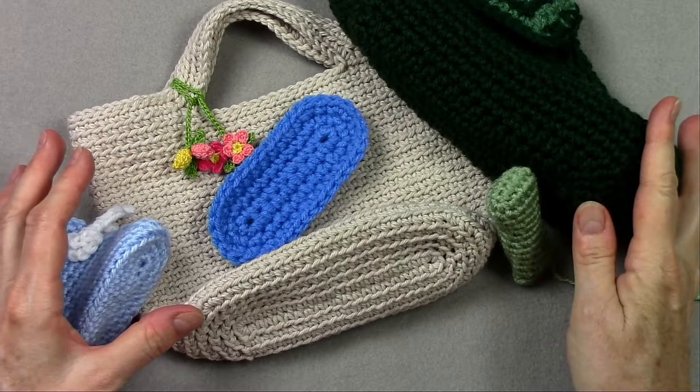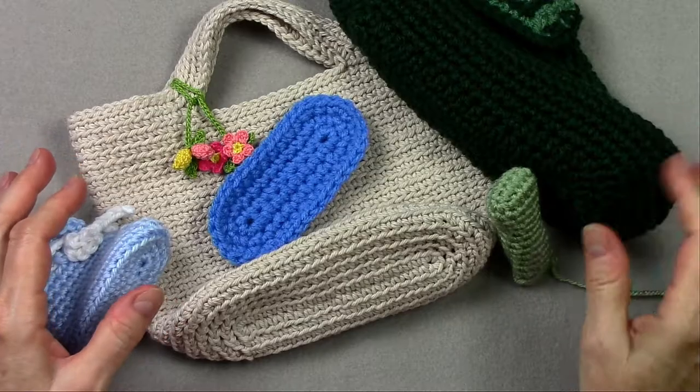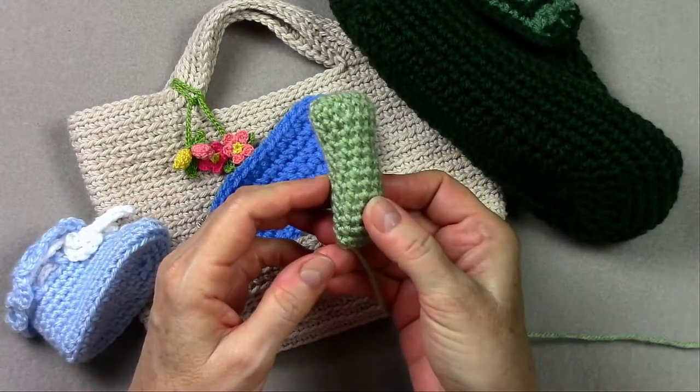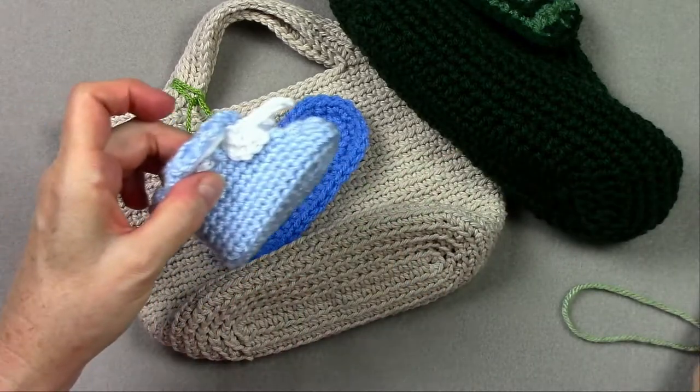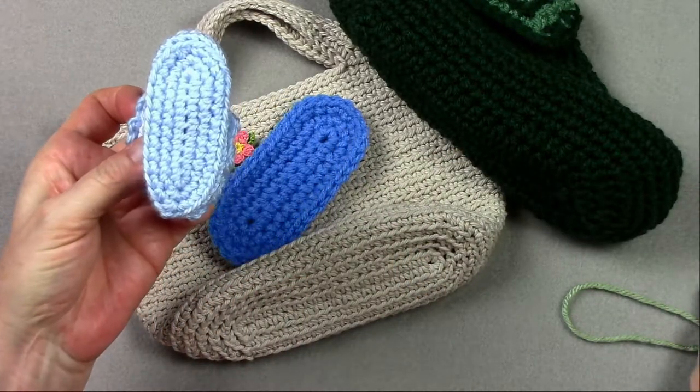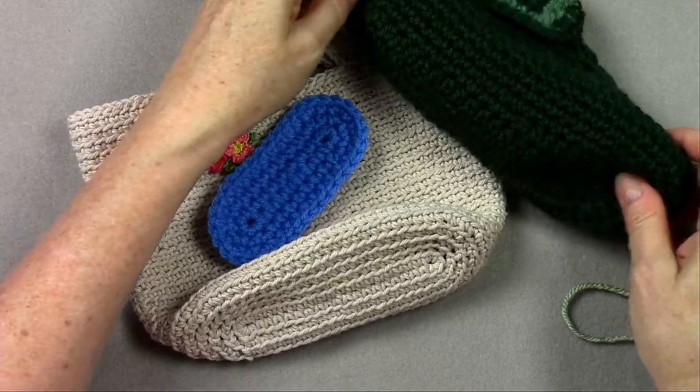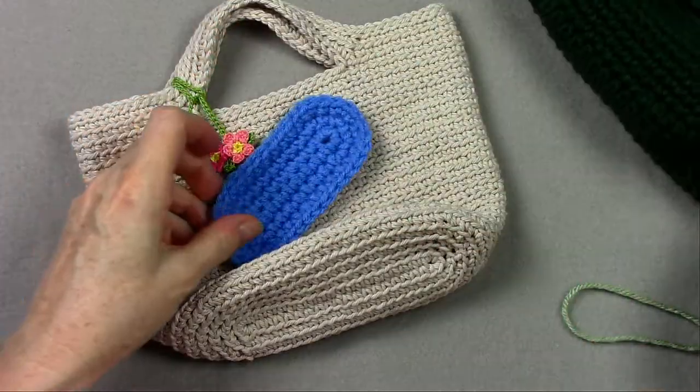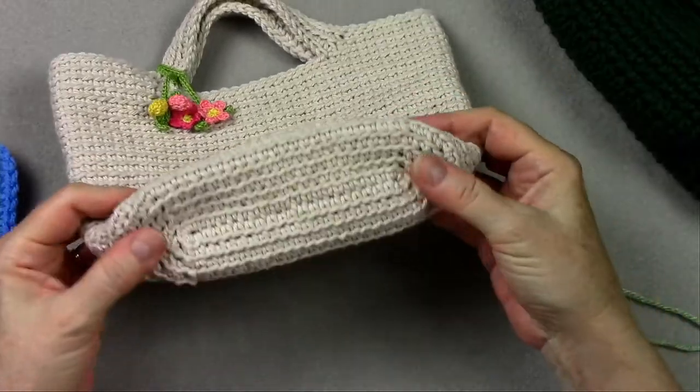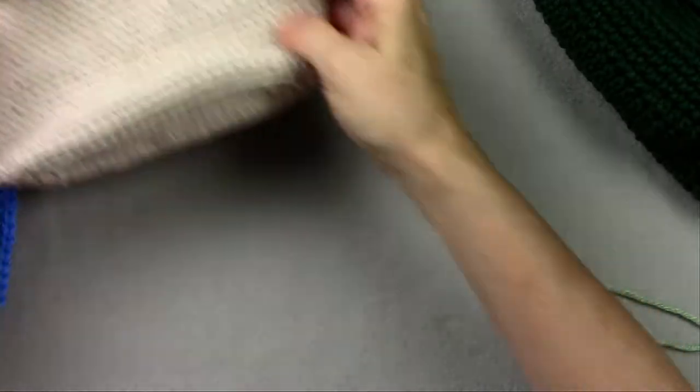I have some projects here that all start with an oval. Here is an arm for an amigurumi. Here's a baby booty. Here is a slipper. And here is a little bag. And you can see that they all start with an oval at the bottom.